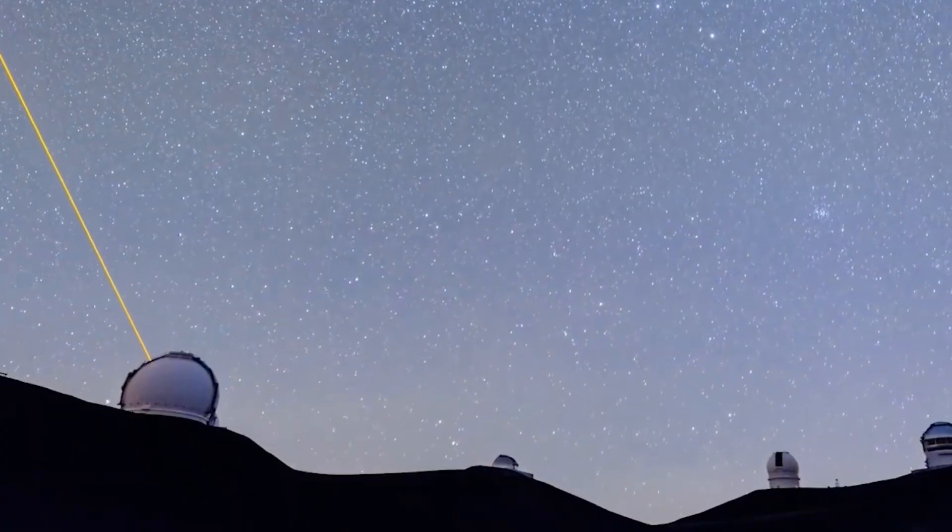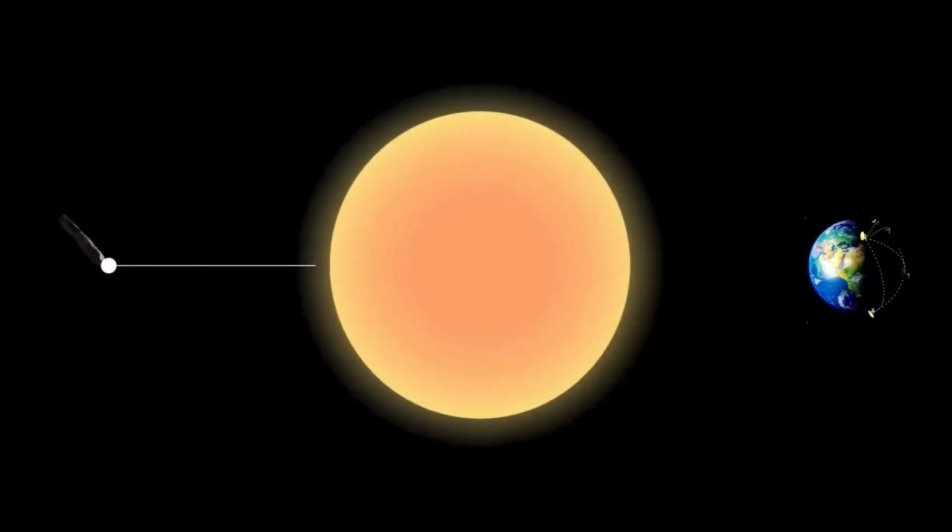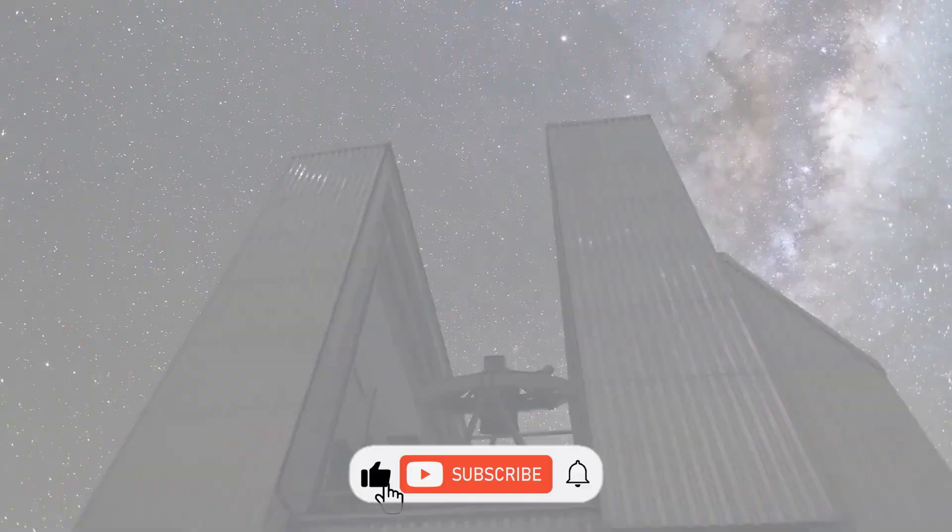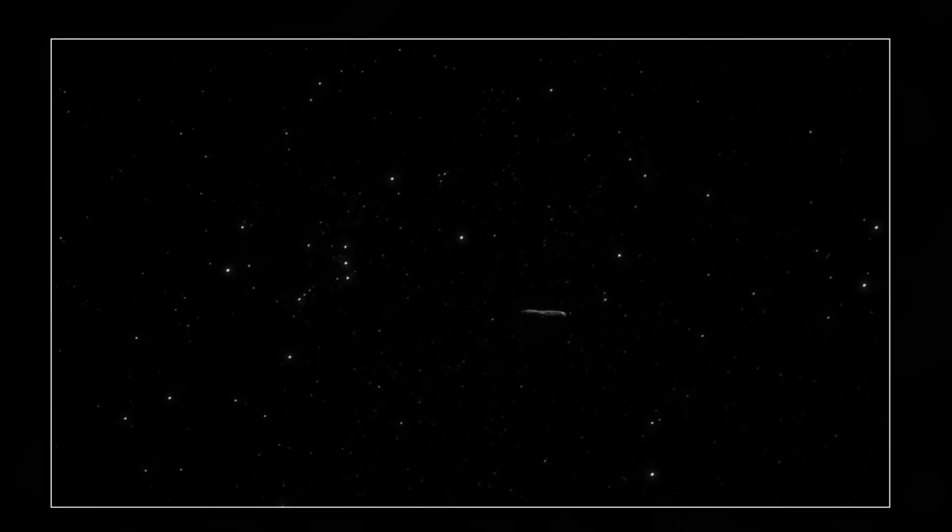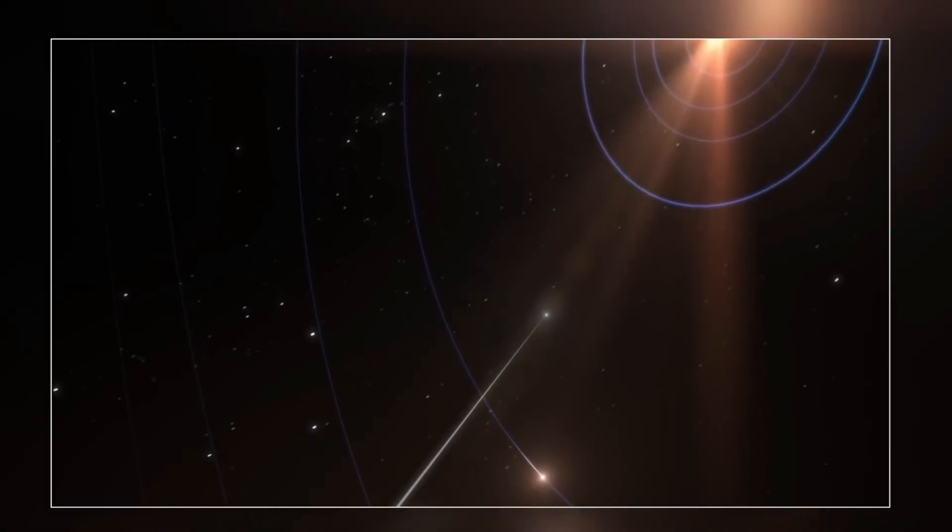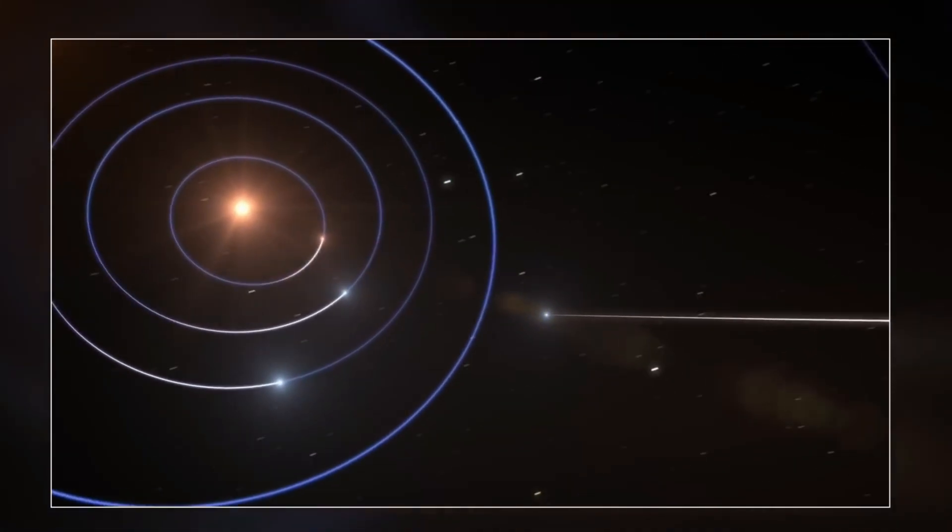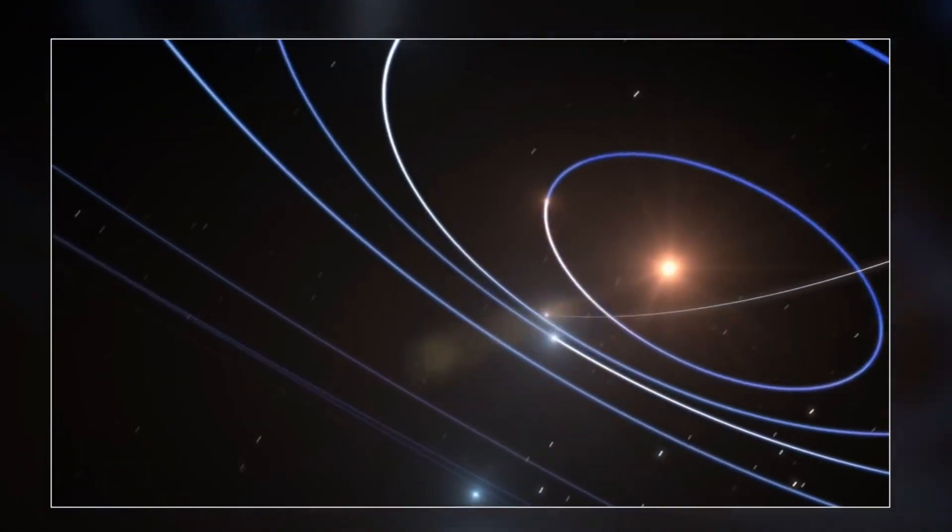The universe is vast, full of mysteries, and 3i Atlas is proving that we're only beginning to understand what's possible out there. Whether it brings us ancient wisdom from another world, or proof that we're not alone, this visitor is about to teach us something profound about our place in the galaxy. If 3i Atlas really is more than just a comet, it could change everything we know about our solar system. What do you think? Natural visitor or something else entirely? Drop your thoughts in the comments, and let's start the discussion. And if you want to stay ahead of the biggest discoveries shaping our future, make sure to hit that subscribe button and turn on notifications. We've got even bigger space secrets coming your way.